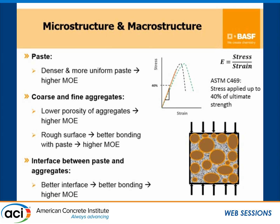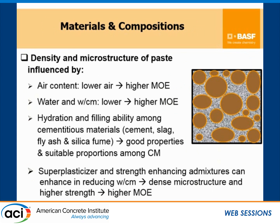Let me start with the first factor: paste. Very simply, denser and more uniform paste leads to higher MOE. Second, coarse and fine aggregate: lower porosity of aggregate leads to higher MOE. Rough surface of aggregate provides better bonding with paste, and therefore leads to higher MOE. Also important is the interface between paste and aggregate — better interface and better bonding can lead to higher MOE. That is the basic approach to achieving high MOE.